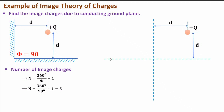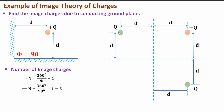Now I'll place the image charges. With respect to the first infinite conducting ground plane, I extend the line and place the first image charge on the opposite side — it has negative polarity and spacing D and D. Similarly, with respect to the second infinite conducting ground plane, there will be a second image charge with negative polarity and spacing D and D on that side.